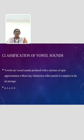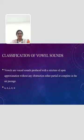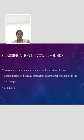The next topic is classification of vowel sounds. Vowels are voiced sounds produced with a structure of open approximation without any obstruction, either partial or complete, in the air passage. All vowels are normally voiced. The vowels are A, E, I, O, U.